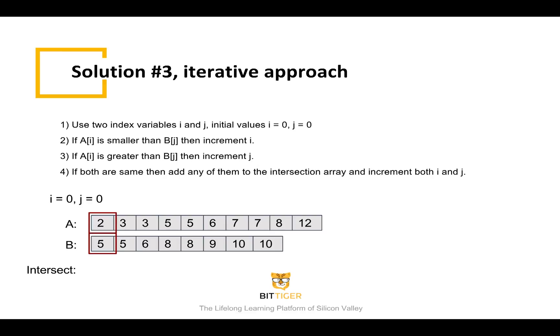We compare the values of the elements that the two pointers are at, A of i and B of j. Now A of zero is equal to two, and B of zero is equal to five. Two is smaller than five, so we increment i to one.